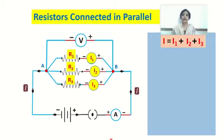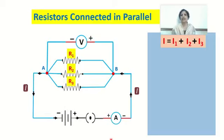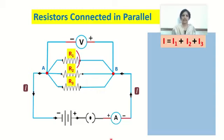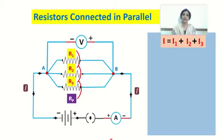Our intention is to find an equivalent resistance whose value equals the parallel combination of these three resistors. We want to find an equivalent resistance equal to the parallel combination of R1, R2, and R3. We consider this equivalent resistor as Rp. When we use only one resistor whose value equals the parallel combination of the three resistors, we need to find the value of Rp.